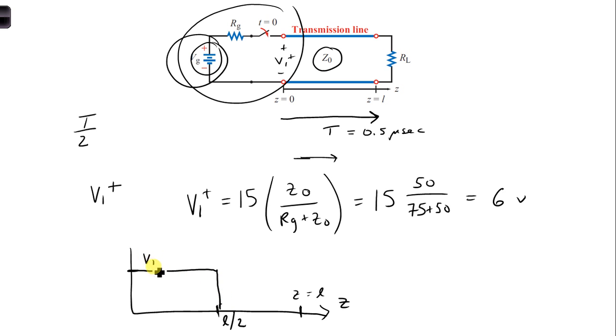So we're going to draw a constant amplitude up until the leading edge of the pulse. And that is V1 plus, which is equal to 6 volts, which we just calculated. And I can label here V versus Z at time T over 2, since the voltage is a function of both space and time. And this is Z equals 0.